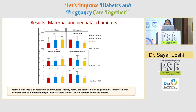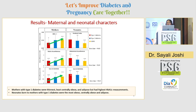Coming to the results, we observed that mothers with type 1 diabetes were the least obese, least centrally obese, and least adipose. In contrast, neonates born in type 1 diabetes pregnancies were the most obese, centrally obese, and adipose. To summarize, we observed an increasing trend in the case of mothers and a decreasing trend in the case of neonates across diabetes type categories.